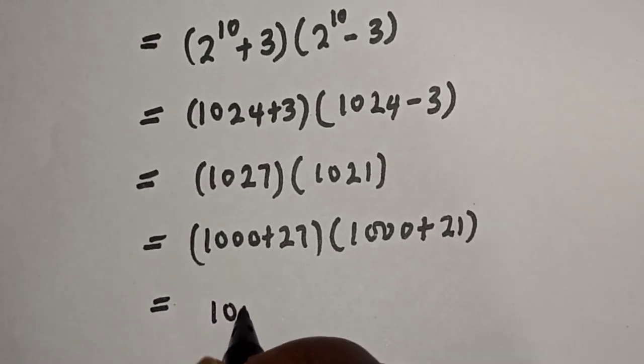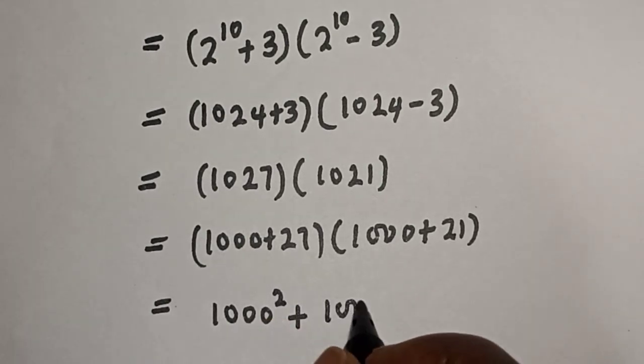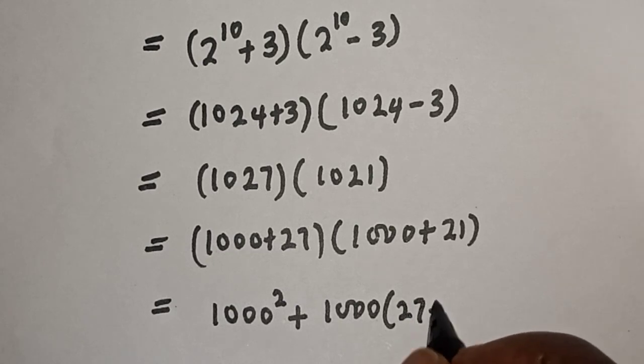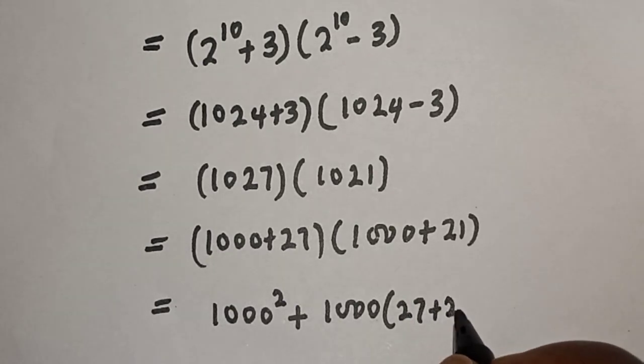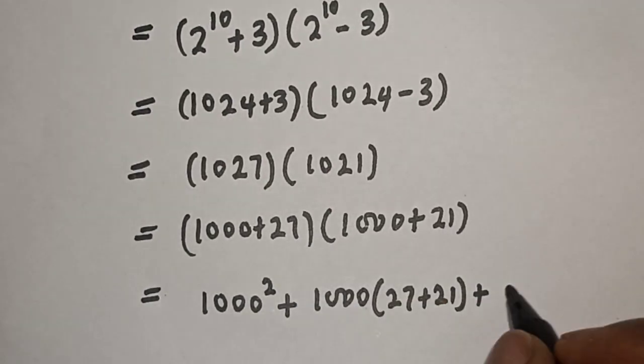Let's multiply out: we have 1000 times 1000, which is 1000 squared, plus 1000 times the quantity 27 plus 21, plus 21 times 27.